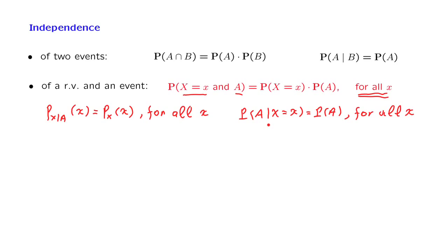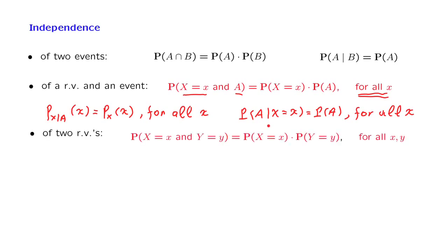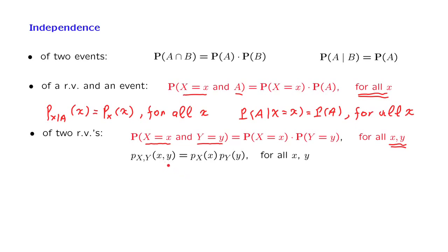We can now define the notion of independence of two random variables. The mathematical definition is that the event that X takes on a value little x and the event that Y takes on a value little y are independent, and this is true for all possible values of little x and little y. In PMF notation, this relation can be written such that the joint PMF factors out as a product of the marginal PMFs of the two random variables. Again, this relation has to be true for all possible little x and little y.